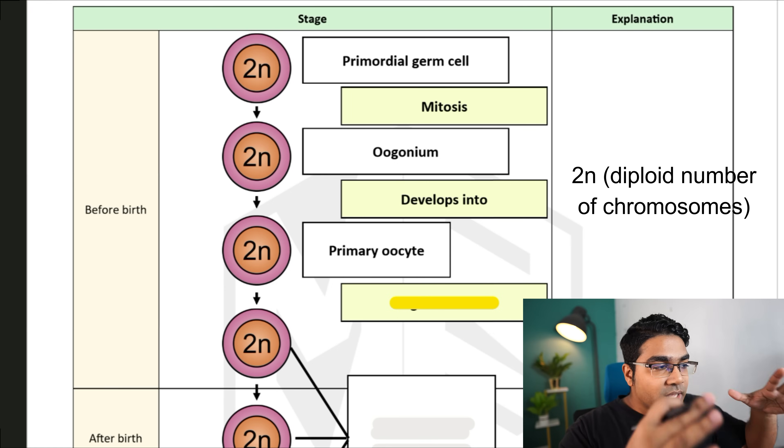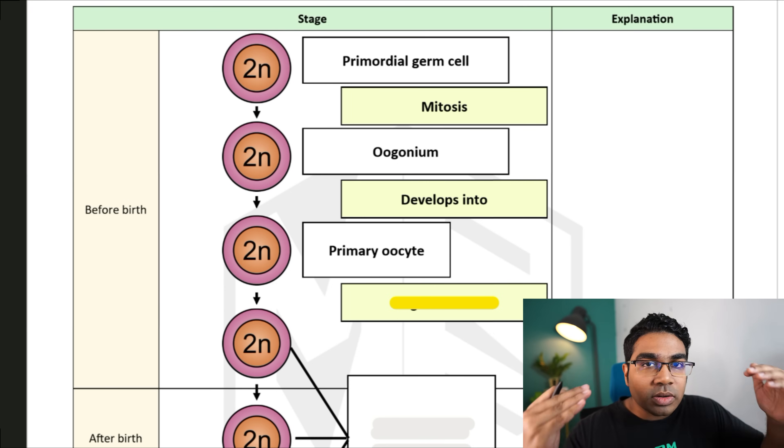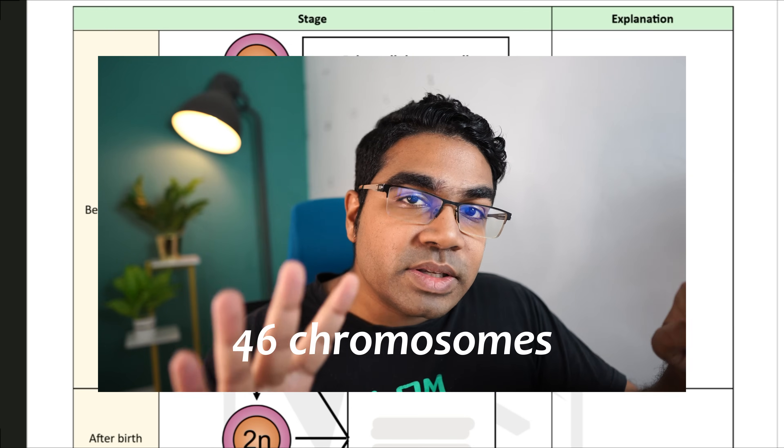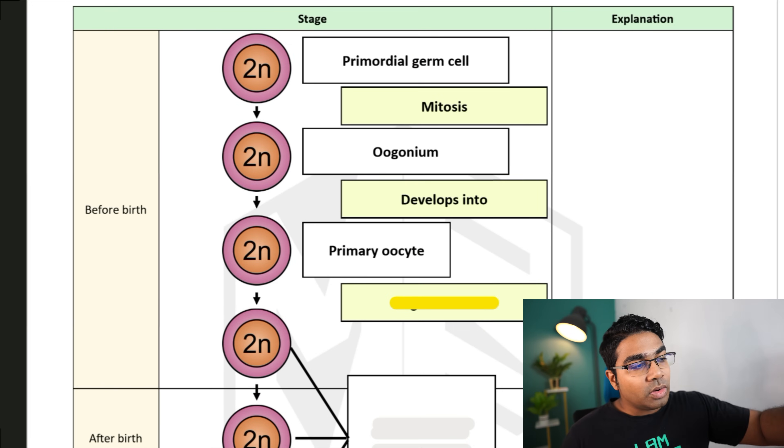All this while you can see the number of cells is 2n. This means that the cells contain all the chromosomes of the organism. In human beings, we have 46 chromosomes. That means that all these cells, the primordial germ cell, the oogonium and the primary oocyte, all contain 46 chromosomes.